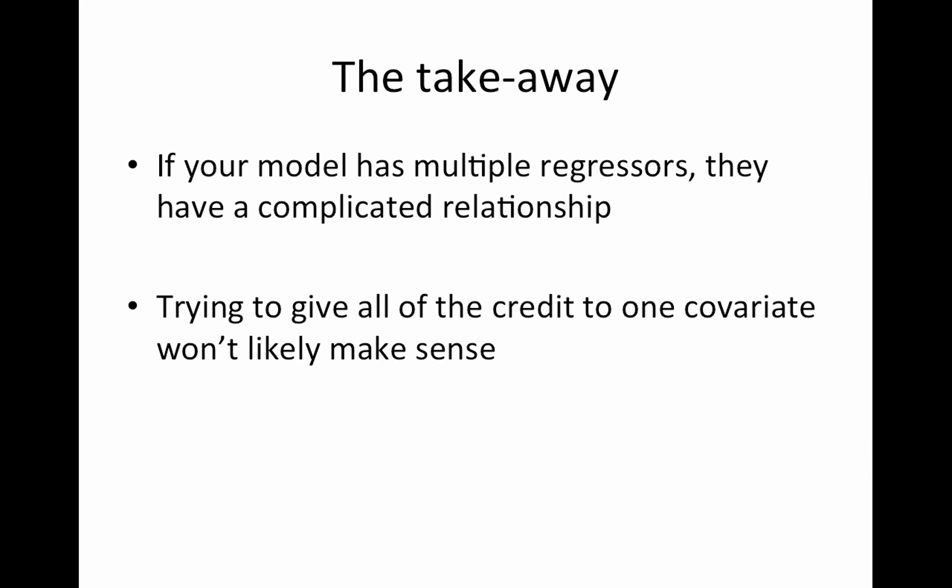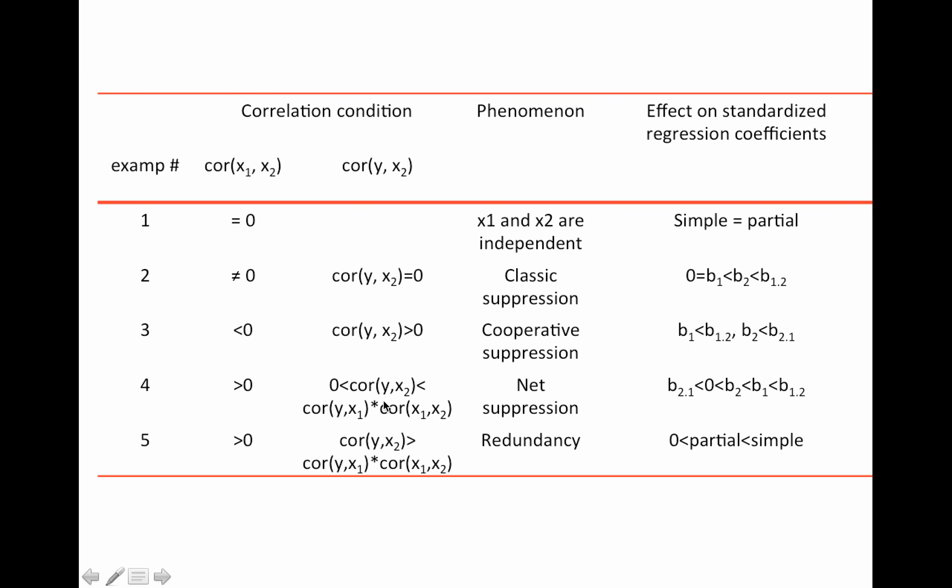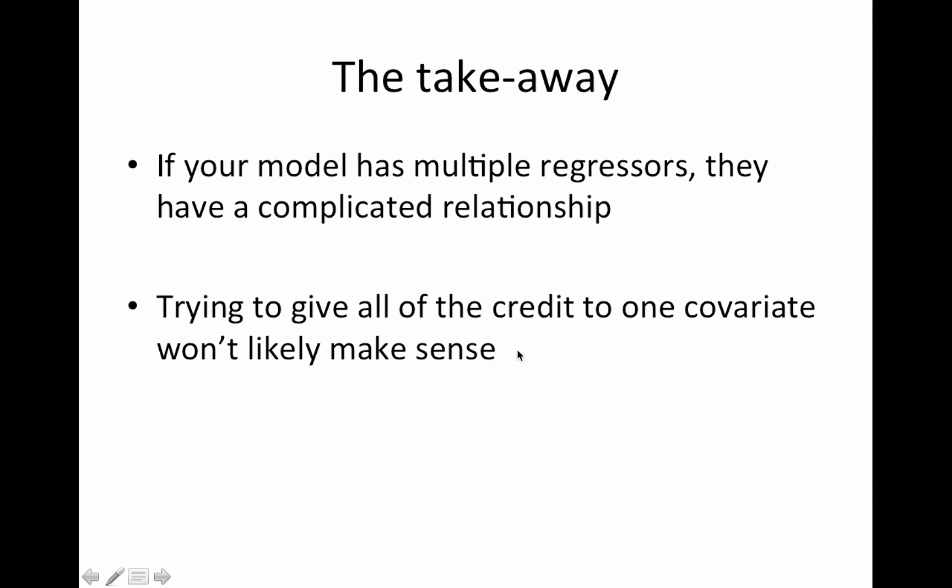The takeaway from this is that if your model has multiple regressors, they have a really complicated relationship. And especially here, you can see it's driven by all sorts of correlations. The correlation between the dependent variable and the independent variable and the independent variables with each other. Trying to give all of the credit to one covariate typically won't make sense because that covariate's parameter estimate has something to do with that covariate and the other covariates in the model. So I'm sure you've heard this saying before, there's no I in team. So it kind of applies here. The regressors are working together as a team. So you can't really give credit to one. This might be an American saying, basically they use it for sports teams. You're supposed to work as a team. You're not supposed to try to win the game by yourself. There's no I in team.